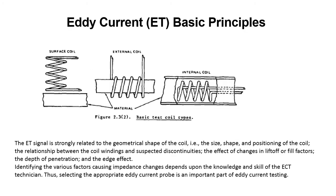The Eddy Current Testing signal is strongly related to the geometrical shape of the coil — i.e., the size, shape, and positioning of the coil — the relationship between the coil winding and the suspected discontinuities, the effect of change in lift-off or fill factors, the depth of penetration, and the edge effect. Identifying the various factors causing impedance changes depends on the knowledge and skill of the Eddy Current Testing Technician, thus selecting the appropriate Eddy Current Testing probe is an important part of Eddy Current Testing.